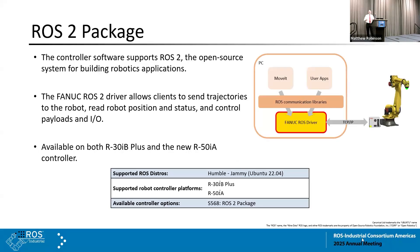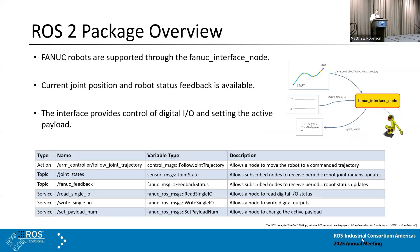So the FANUC ROS package — this package has actually been available in its current form for just over a year. The number of robots it supports has grown over that time; I think we're on the fourth or so release of the driver. Basically what it does: we can take a filed joint trajectory from MoveIt and bring that in, sending the commands over to the robot over the communications. It also allows for robot joint angle status, payload changes, and IO control. So you have a reasonable interface between ROS clients and the robot.